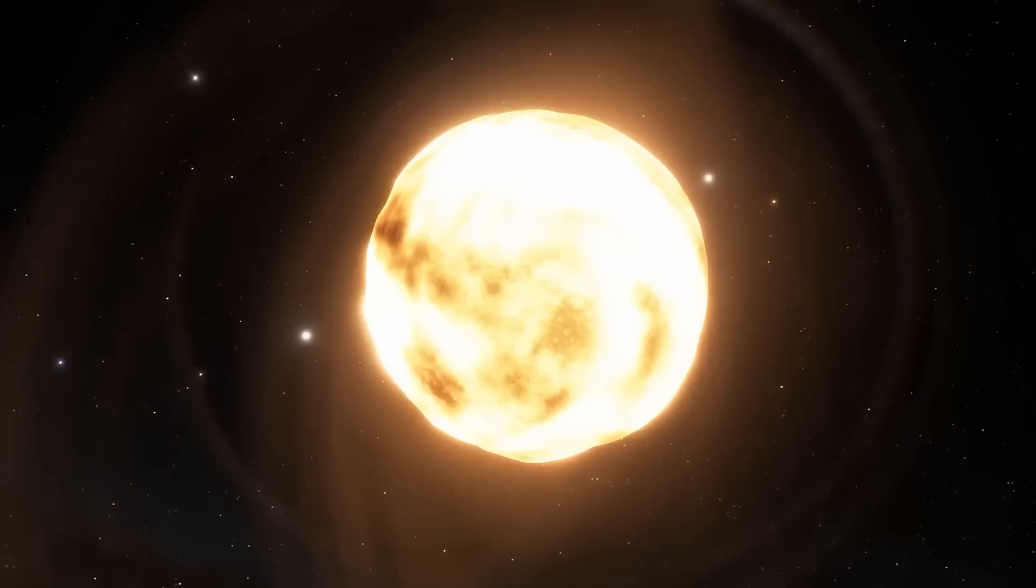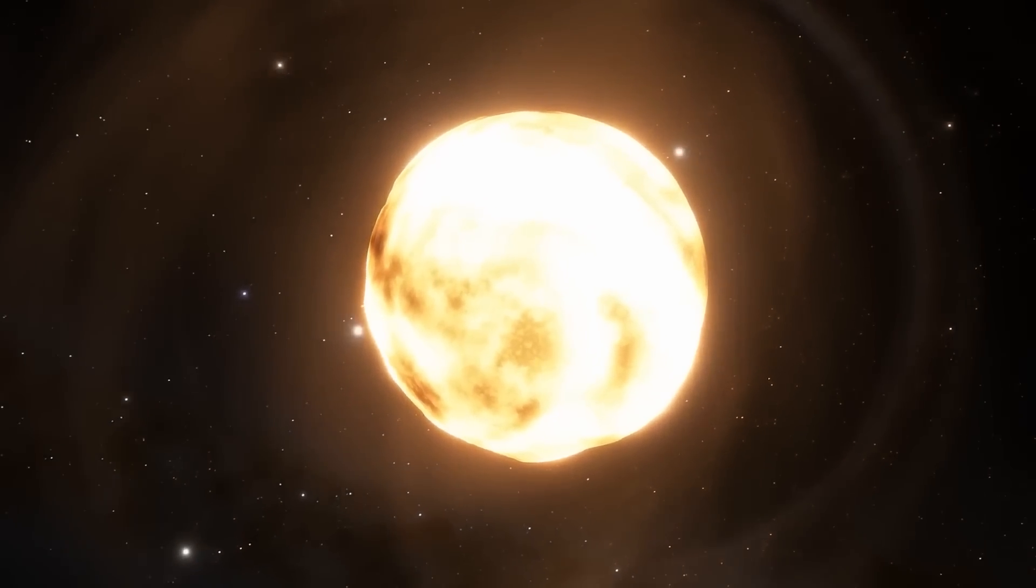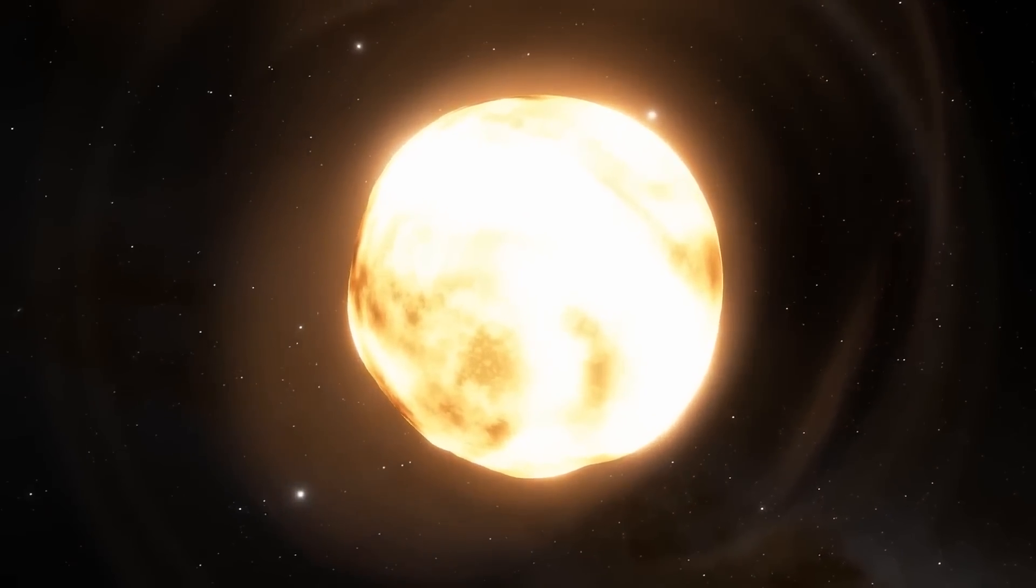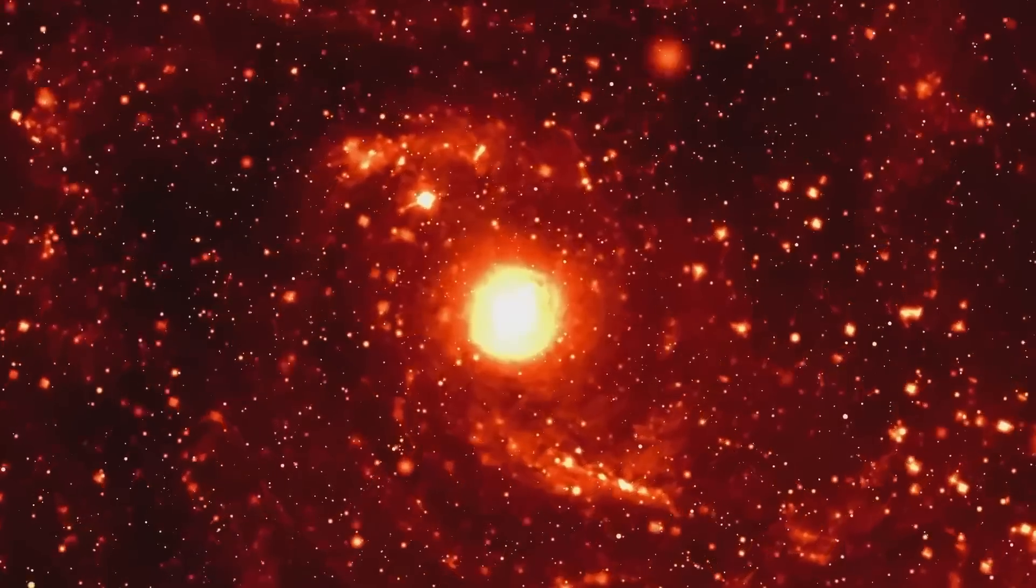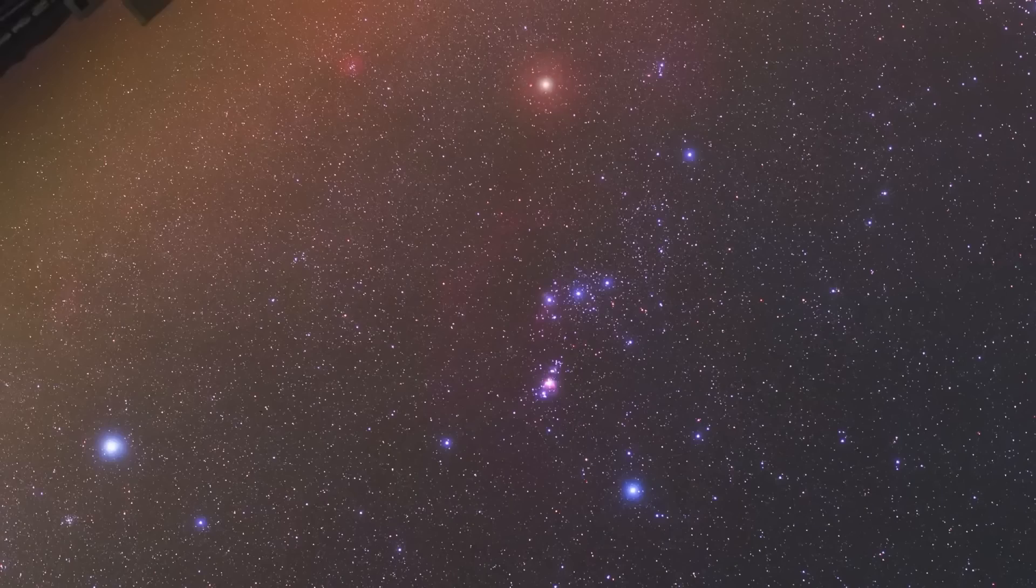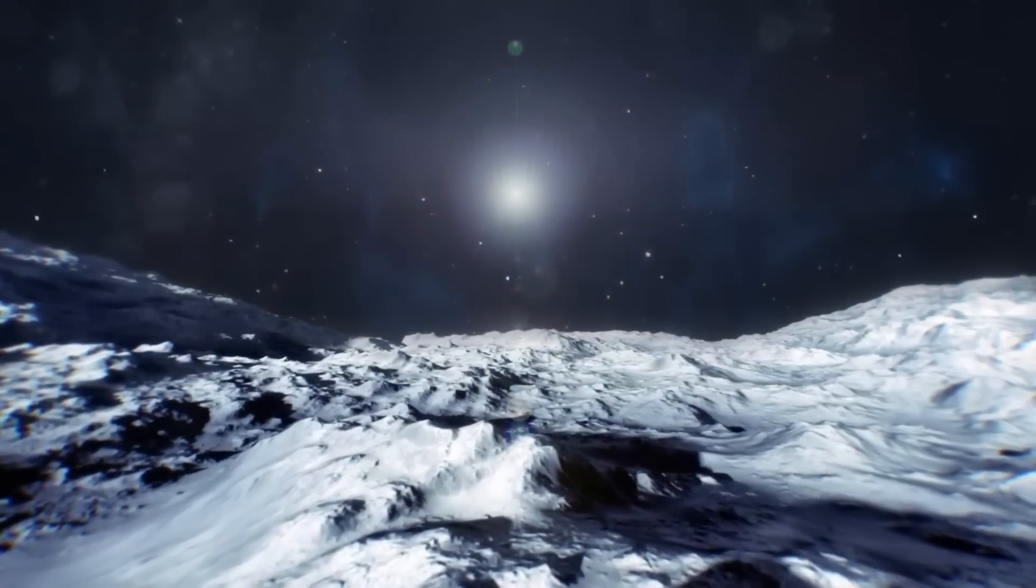Betelgeuse is what we call a variable star because it loves to pulsate and show off. It expands and contracts in size over time, like a cosmic breathing exercise. And let me tell you, this pulsation is no small feat. It causes Betelgeuse's brightness to fluctuate, making it one of the brightest stars in the sky at times, and then dimming significantly at others.